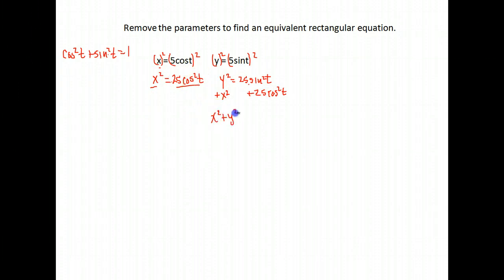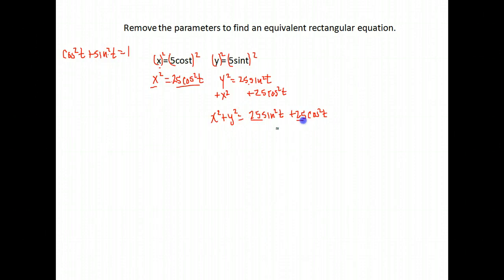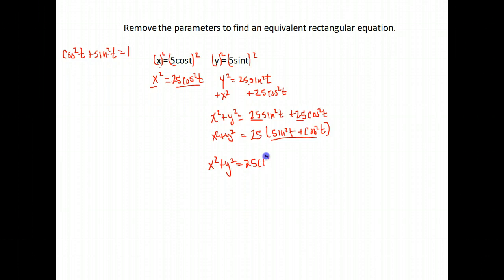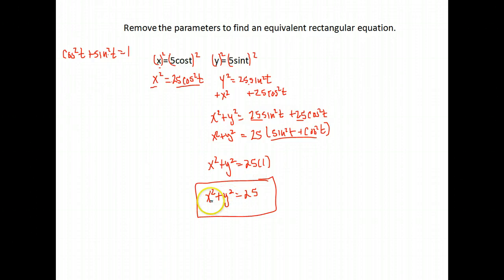So over here I get x squared plus y squared. On this side I get 25 sine squared t plus 25 cosine squared t. I don't have cosine squared plus sine squared directly, but since they're both 25, I can factor out 25 and that gives me sine squared plus cosine squared, which from our identities equals one. So I get x squared plus y squared equals 25 times one, which is just x squared plus y squared equals 25. This is the standard form of the equation of a circle centered at zero with a radius of five. You can always graph your parametric equations and your resulting equation and just make sure they actually match up.